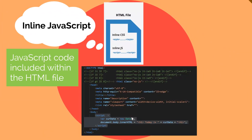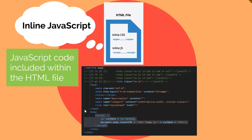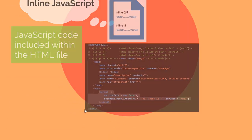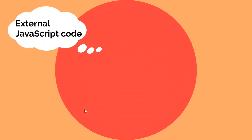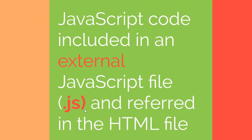Here is an example of inline JavaScript. In this example, this is a typical HTML page, and at the very bottom inside the body, we have added a script tag, and inside the script tag we have added some JavaScript code. This is called inline JavaScript code. The second way is external JavaScript code — where the JavaScript code is placed in an external file with the extension .js.